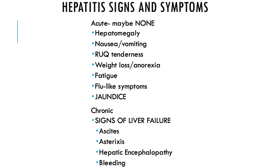The list for chronic could go on and on because there are so many functions of the liver. Acute is more of the generalized symptoms — GI, flu, and jaundice — whereas chronic is going to show a lot more of those signs that the liver itself is not working, like fluid imbalances, bleeding risk, poor nutrition, and all those more chronic manifestations.